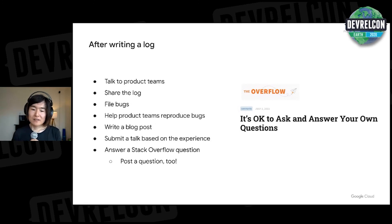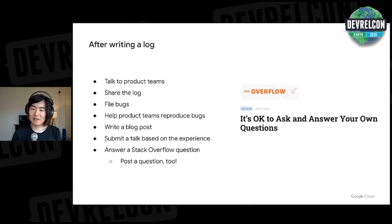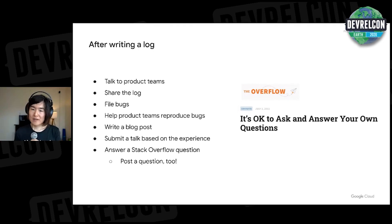And after writing a log, you talk to product teams, share the log, file bugs, help them reproduce bugs, prioritize bugs, and help them fix bugs. And on the other hand, you could write a blog post, or submit a talk proposal based on that experience, because you found an issue and the answer, and you know that's relevant — so that's a great talk proposal. And you can also answer Stack Overflow questions, if there are any. And if you can't find a Stack Overflow question, you can also post a question too. On Stack Overflow, it's officially encouraged to ask and answer your own question, so it's a great place to share product knowledge or tips.